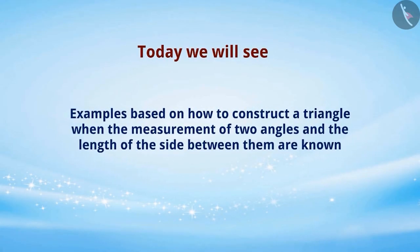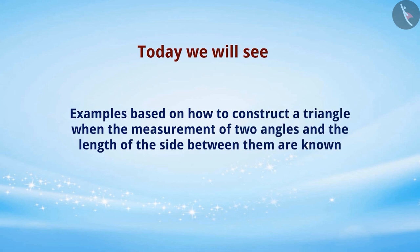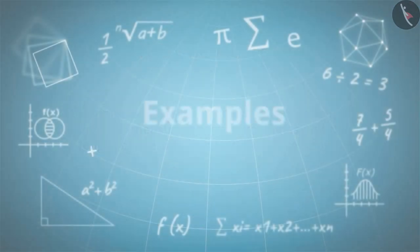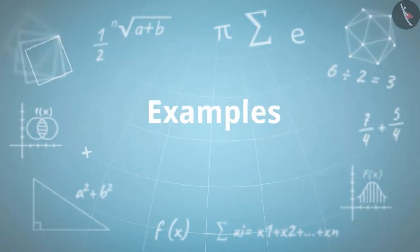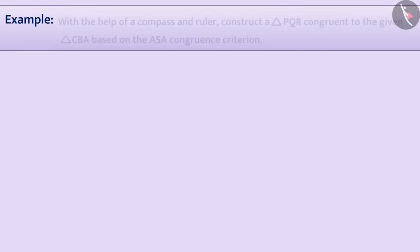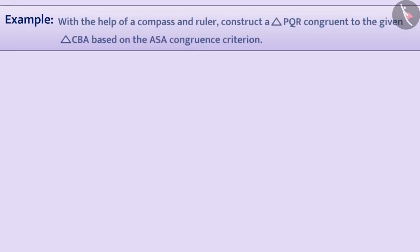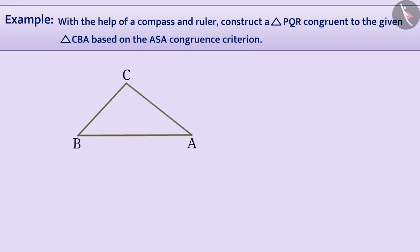Today we will see some examples based on how to construct a triangle when the measurement of two angles and the length of the side included between them are known. With the help of a compass and ruler, construct a triangle PQR congruent to the given triangle CBA based on the ASA congruence criteria.